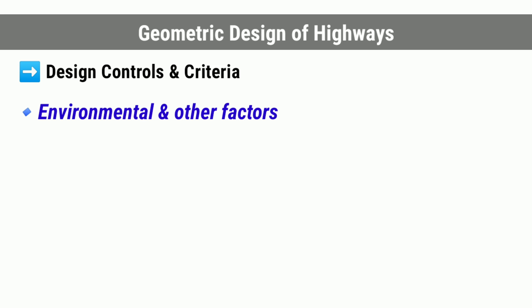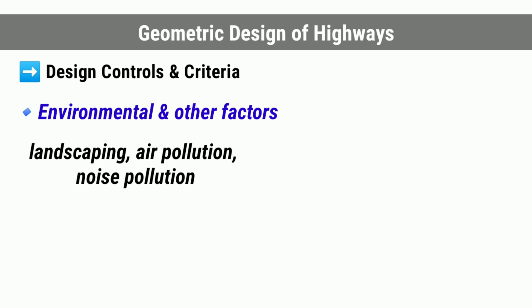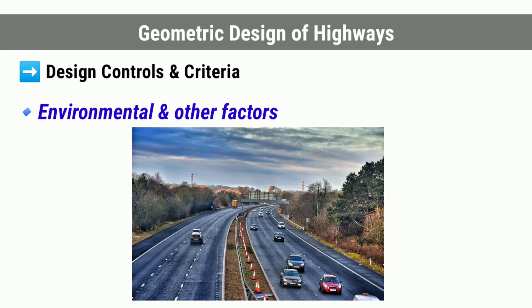The final factor is environmental and other factors. The environmental factors such as landscaping, air pollution, noise pollution, and other local conditions should be given due consideration in the design of road geometrics. Some of the high-speed highways and expressways are designed for higher speed standards and uninterrupted flow of vehicles by providing controlled access and grade separation, including grade-separated intersections.